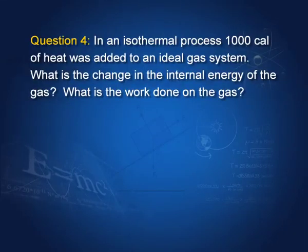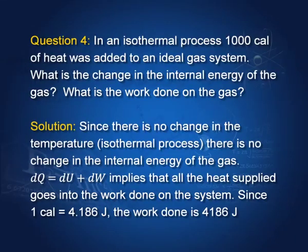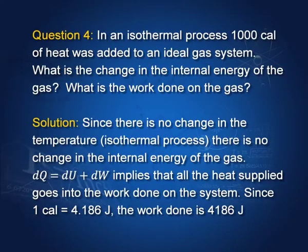Question 4: In an isothermal process, 1000 calories of heat was added to an ideal gas system. What is the change in internal energy? What is the work done on the gas? Since the process is isothermal, there is no change in temperature, hence no change in internal energy: ΔU = 0. All heat given is 1000 calories = 4186 joules, which equals the work done, since ΔU = 0.